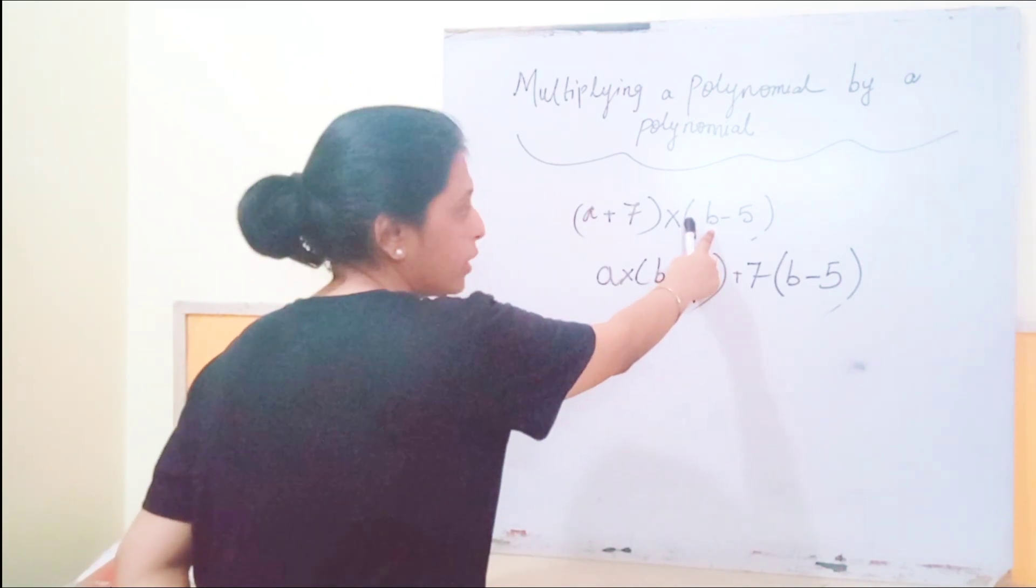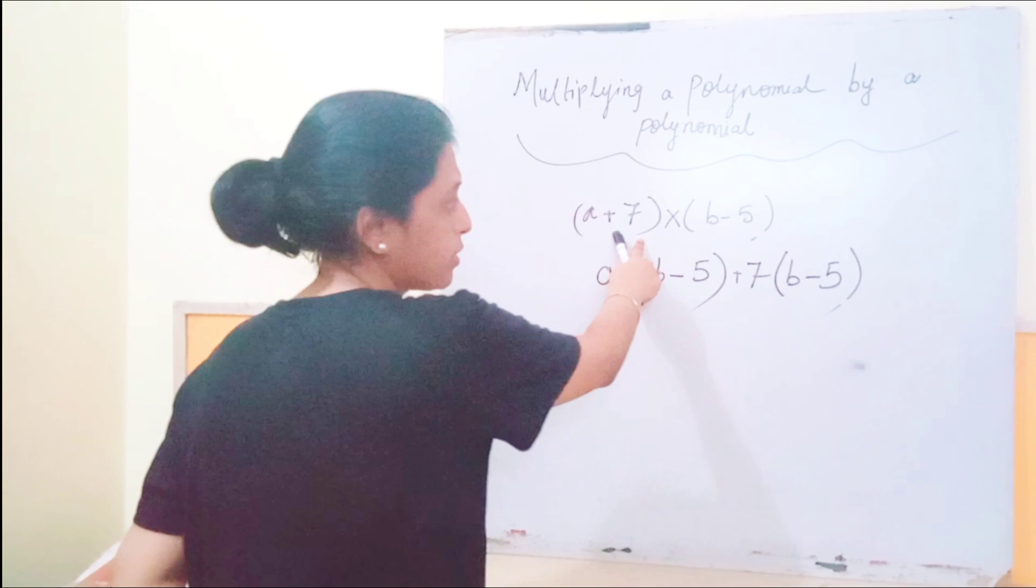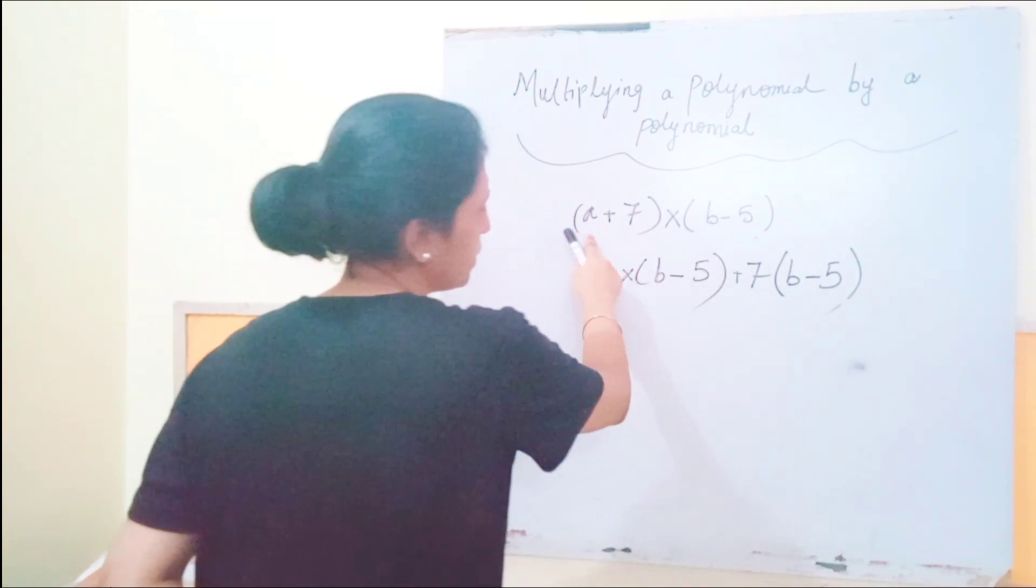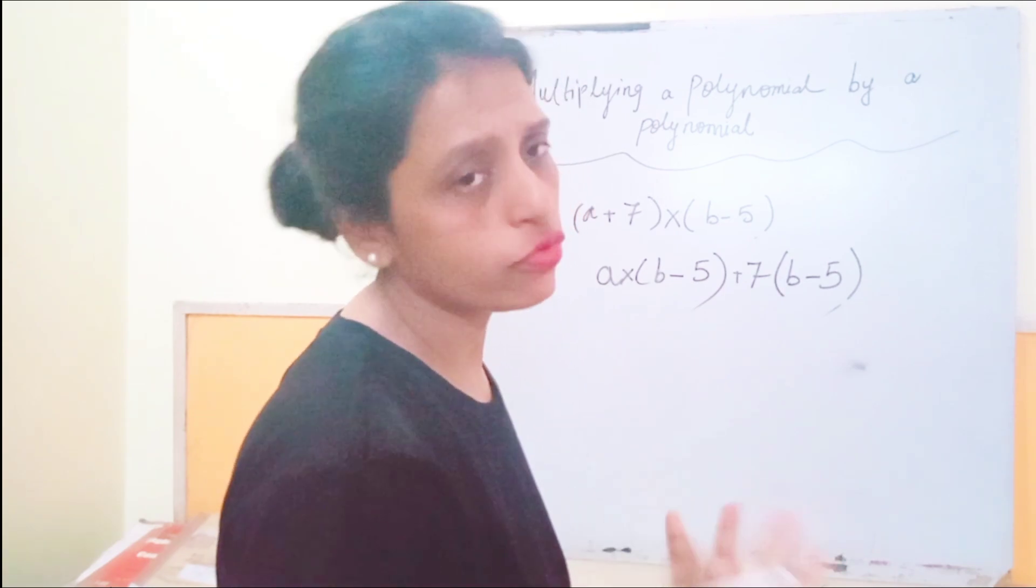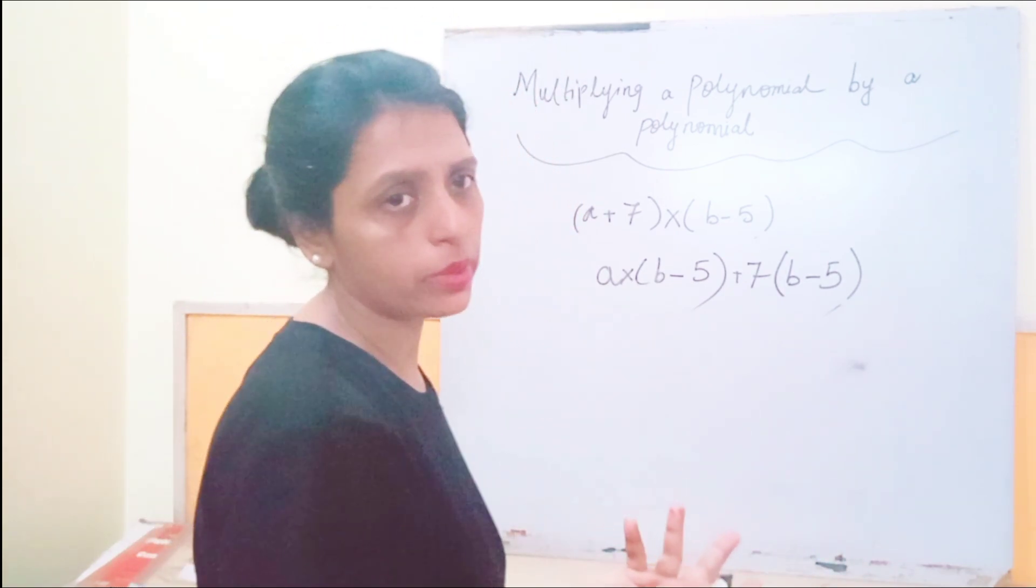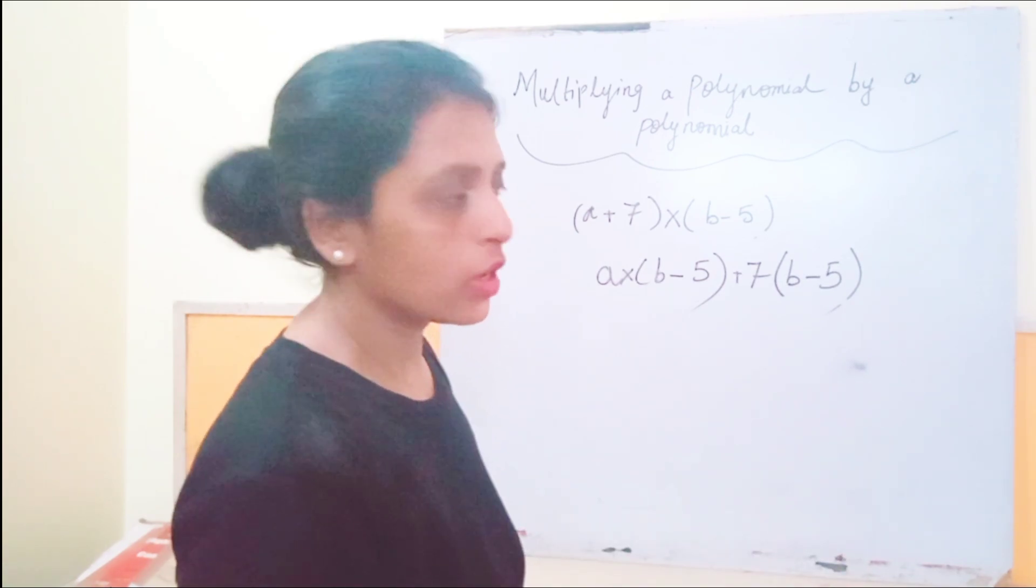You can multiply with b, a plus 7, and then minus 5, a plus 7. We have to follow, we can follow commutative property. Commutative property means a into b or b into a. Okay.